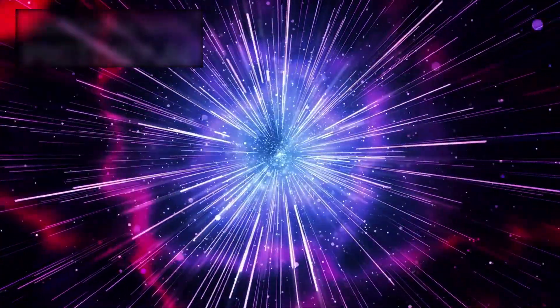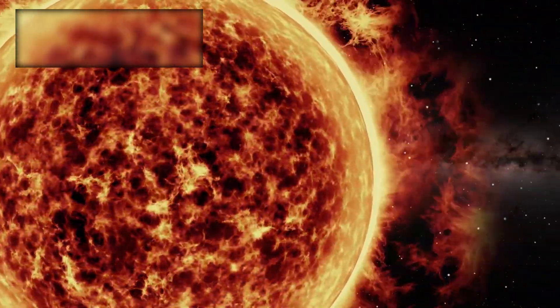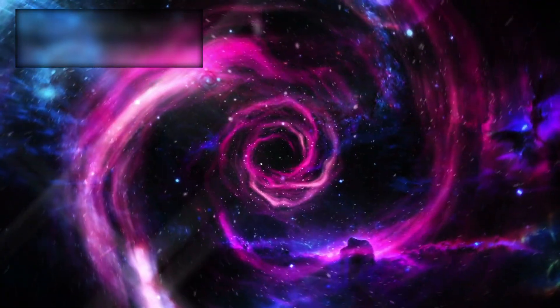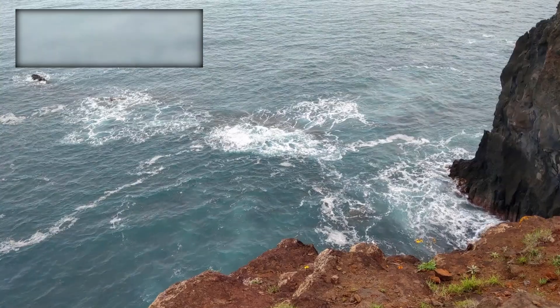These weren't gradual changes, they were abrupt and sharp, like stepping from one biome into another. We used to think the sun's heliosphere faded gently into space. Voyager showed us otherwise - it's not a shoreline, it's a cliff. And beyond it, the rules change.